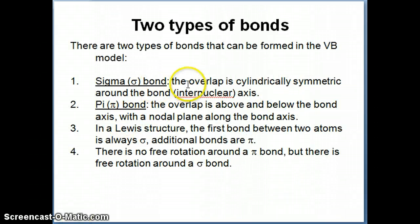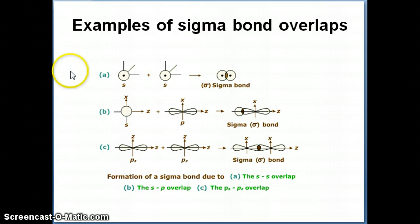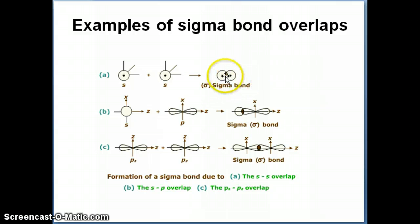The difference between the two types of bonds is that with a sigma bond, the overlap area of the orbitals is cylindrically symmetric around the internuclear axis. With a pi bond, on the other hand, the overlap is not cylindrically symmetric around the bond axis — instead, it is symmetric around the axis that is perpendicular to the bond axis.